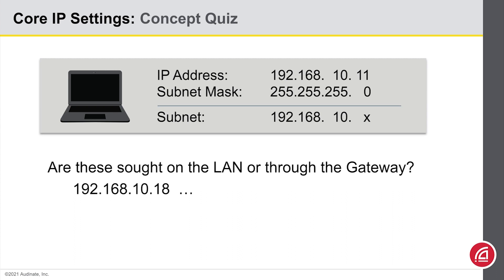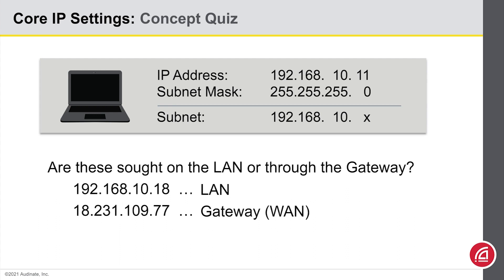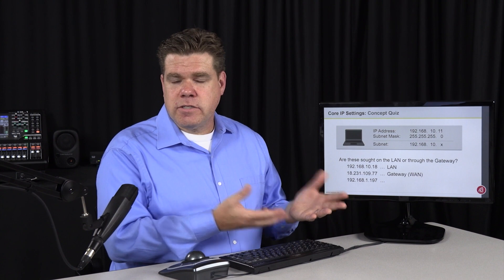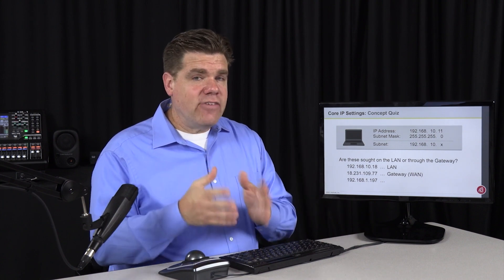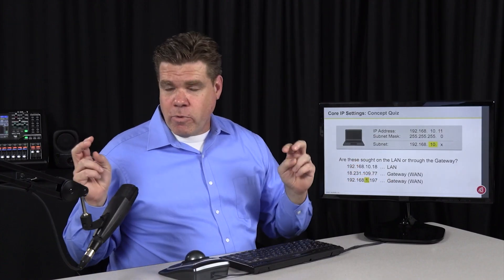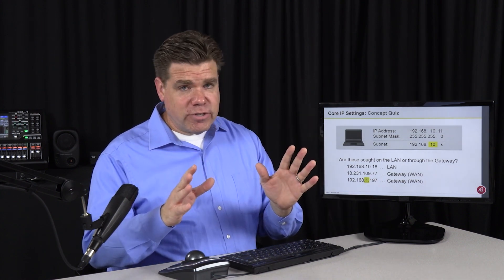The first is 192.168.10.18 — this is found on the local network, no doubt about it. How about 18.231.109.77? That is certainly on the wide area network, so we go to the gateway. But how about 192.168.1.197? This one trips people up a lot because it looks like a local area network address — and you're not wrong about that. But the question is: is the device in our subnet? That third field should have a 10 in it if it's in our subnet, and it fails that test. The address we're evaluating has a 1 in that third field, so we would go to the gateway to find this device. As we'll learn in level three, it may not be going to the wide area network — it may go to another local area network — but for sure you're going to the gateway.